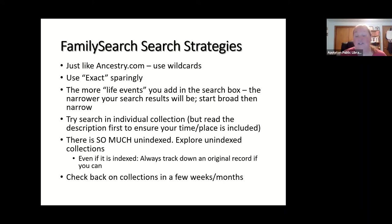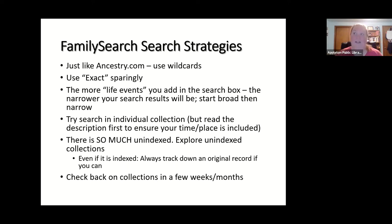There is so much on FamilySearch that's unindexed, so make sure you're exploring those unindexed collections by narrowing down by location and then browsing images. Usually even unindexed content is laid out nicely — census records are listed by cities and localities, probates and wills are often alphabetical or broken out by year. So it's not like you're searching through 10,000 images randomly — if your name starts with 'S' and there are 3,000 results, you'd skip toward image 2,000 and adjust from there.